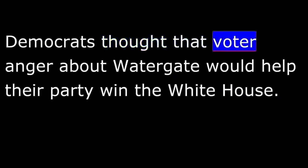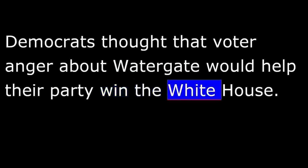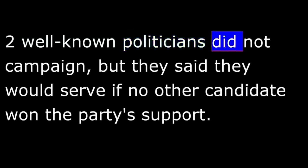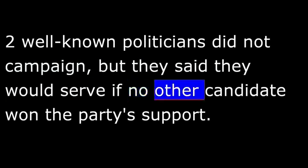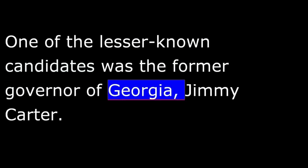Democrats thought that voter anger about Watergate would help their party win the White House. Eleven Democrats campaigned for the nomination. Two well-known politicians did not campaign, but they said they would serve if no other candidate won the party's support. They were former Vice President Hubert Humphrey and Senator Ted Kennedy. One of the lesser-known candidates was the former governor of Georgia, Jimmy Carter.